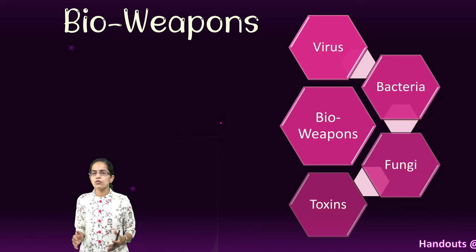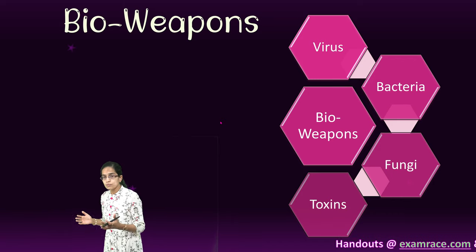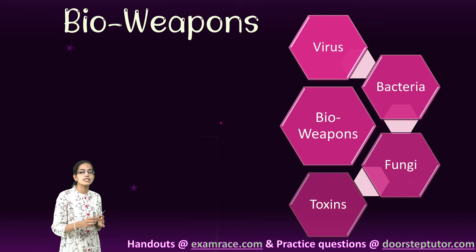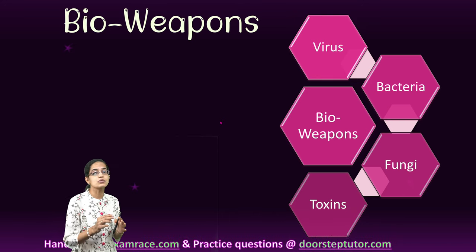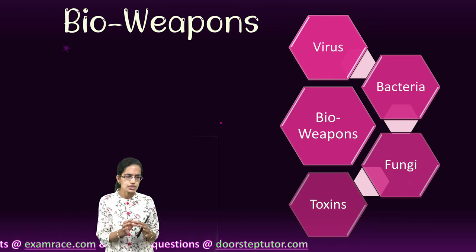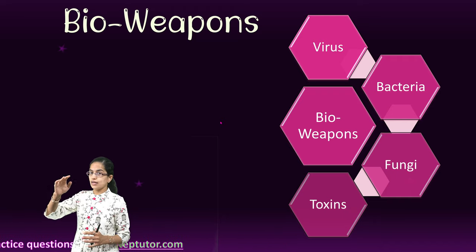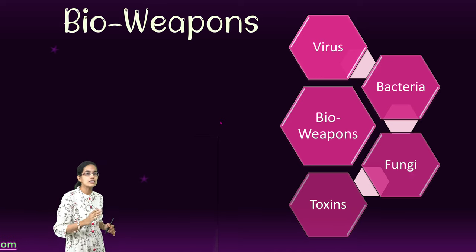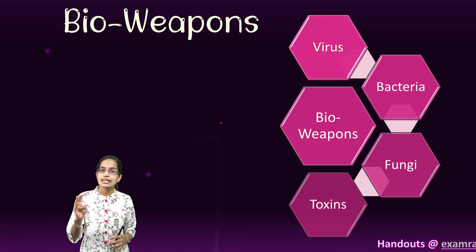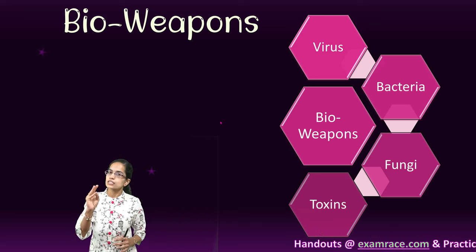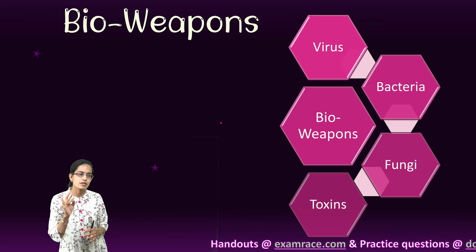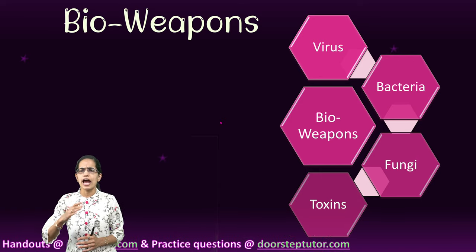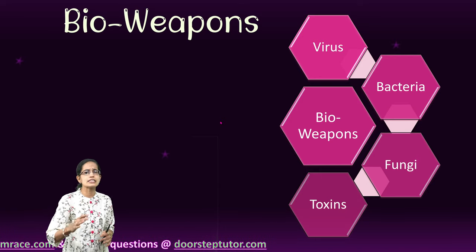If we classify these bio-weapons, they could be in the form of viruses, bacteria, fungi, or any toxins that are released. Most commonly heard about stories, if we look onto our past, have related bio-weapons to diseases like anthrax, smallpox, and plague. We would talk about the history of bio-weapons in a while and how they had been used ruthlessly in the past.